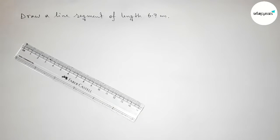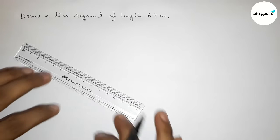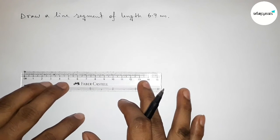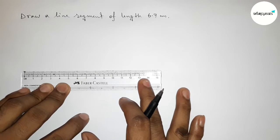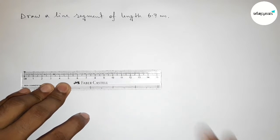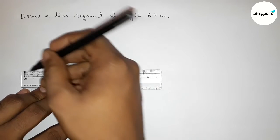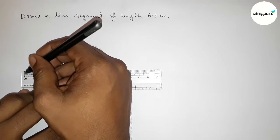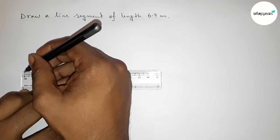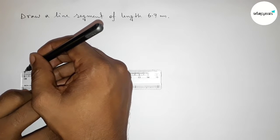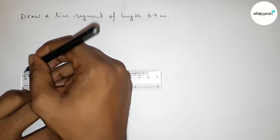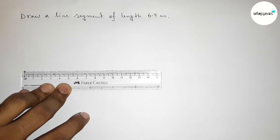Let's start the video. First of all, with the help of a scale, putting the scale here perfectly. Then we have to measure the length 6.9, so first marking here. This is starting zero, so first marking zero.